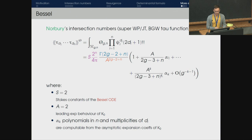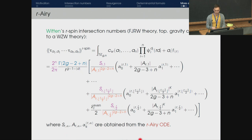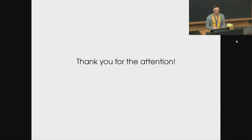This strategy applies to many more examples with the same structure. For instance, Norbury's intersection numbers relevant in super Weil-Petersson volumes or JT gravity — the formula is exactly the same, with model-dependent ingredients like Stokes constants and instanton connections from the quantum curve for this problem, which is the Bessel ODE. This also applies to a much more complicated example: r-spin intersection numbers, where the formula has the same structure with model-dependent ingredients related to the r-Airy ODE. Thank you very much.